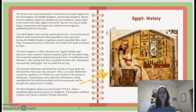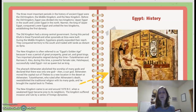Egypt History: The three most important periods were the Old Kingdom, Middle Kingdom, and New Kingdom. Before the Old Kingdom, Egypt was divided into Upper Egypt in the south and Lower Egypt in the north. Narmer, king of Upper Egypt, conquered Lower Egypt and united the two kingdoms, establishing the first dynasty. The Old Kingdom had a strong central government; during this period, Khufu's Great Pyramid and other pyramids at Giza were built. During the Middle Kingdom, Egyptians expanded their reach, conquering territory to the south and trading with lands as distant as Syria. The New Kingdom is often referred to as Egypt's Golden Age — a period of great prosperity, great art, and great kings. Two important pharaohs reigned during this time: Tutankhamun and Ramses II.